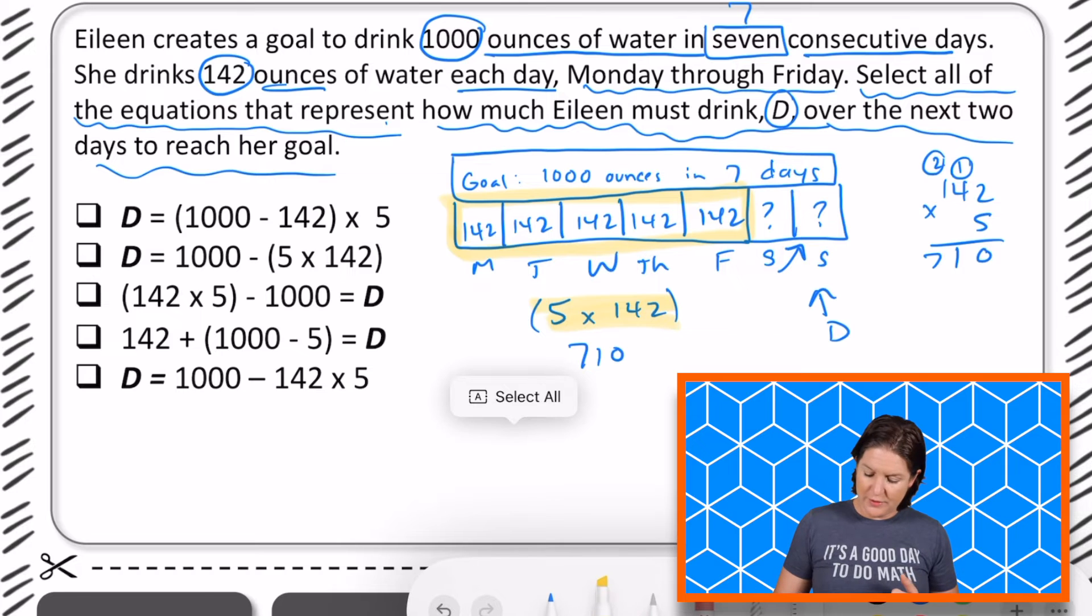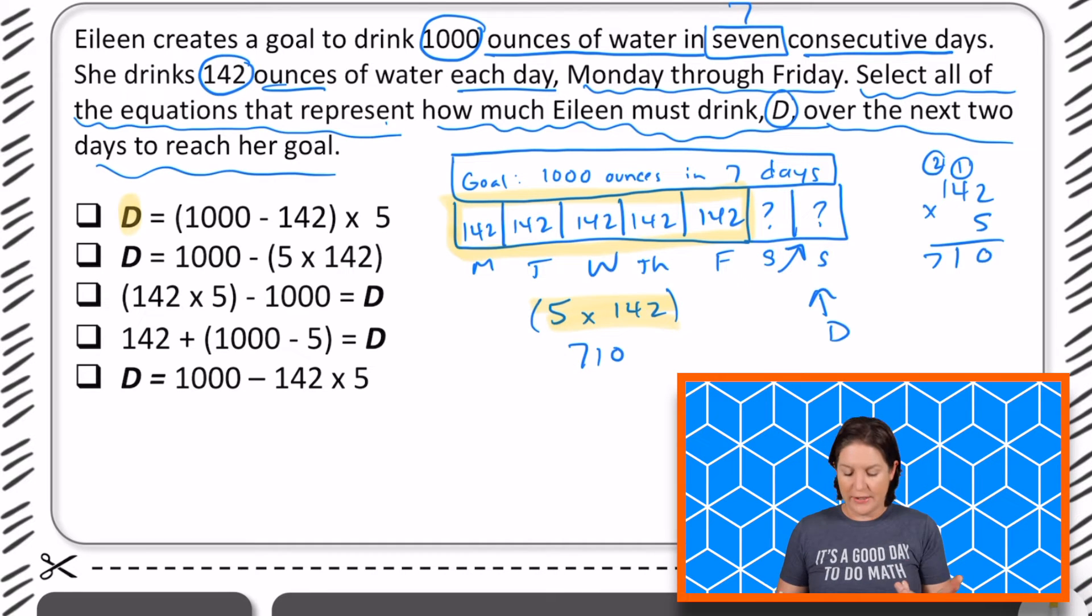So first to figure out how much she drinks, should we take 1000 and subtract 142 only one time? No, that's not going to give us anything, right? That would only be one day we need the five days here. So let's go ahead and eliminate this first one.